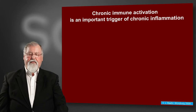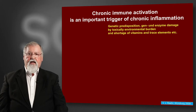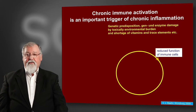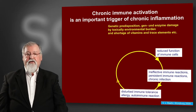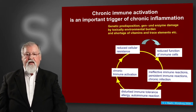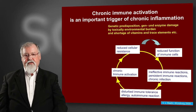Chronic immune activity is an important trigger of chronic inflammation. Due to genetic predisposition, gene and enzyme damage caused by toxic environmental burden, and due to shortage of vitamins and trace elements, we can have a reduced function of immune cells, leading to ineffective immune reactions and persistent immune reactions to chronic infections. This leads to disturbed immune tolerance, allergy, and autoimmune reactions, leading to chronic immune activity. This brings reduced cellular resistance, going back to the starting point of reduced immune system function. This is the circle which goes round and round.